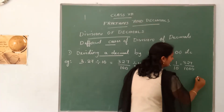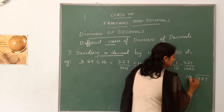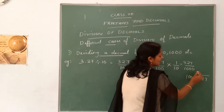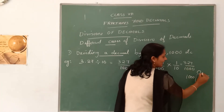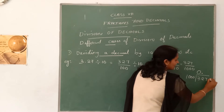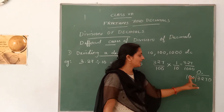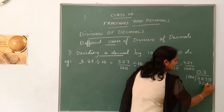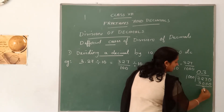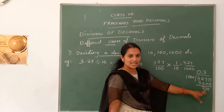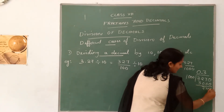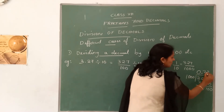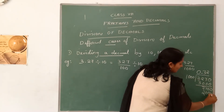Now divide 327 by 1000. Since the dividend is less than the divisor, we put 0 in the quotient and place a decimal. Then put one 0 on the right side of the dividend. How many times does 1000 go into 3270? That is 3. So 3 times 1000 equals 3000. Subtract: the remainder is 270. Again, the dividend 270 is less than the divisor 1000, so put one 0 on the right side. How many times does 1000 go into 2700? That is 2. So 2 times 1000 equals 2000, remainder 700.